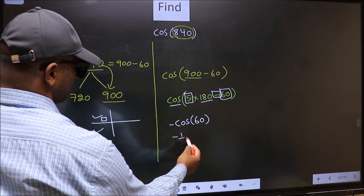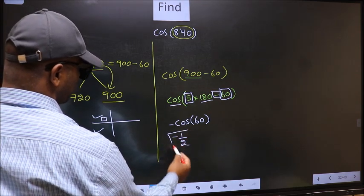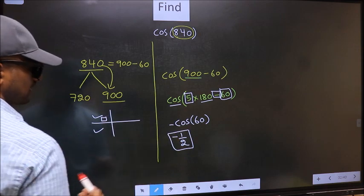So negative cos 60 is 1 by 2. This is our answer.